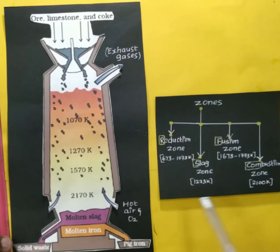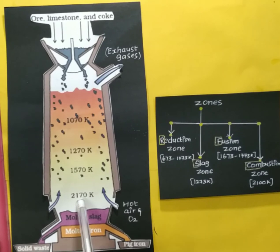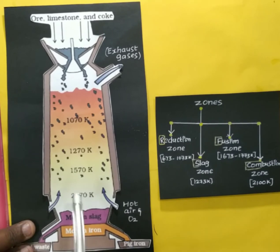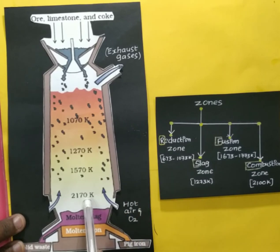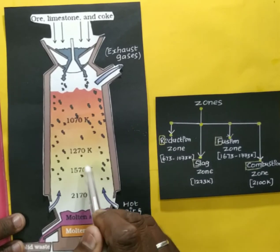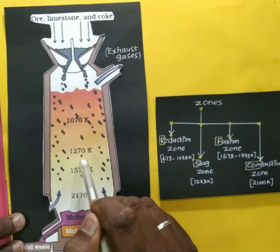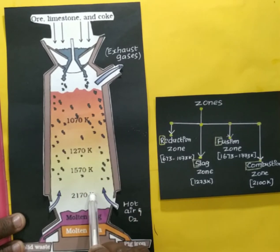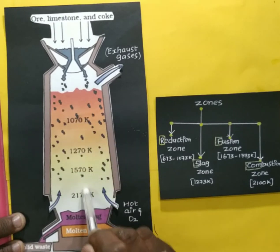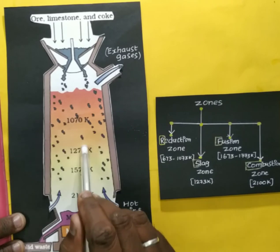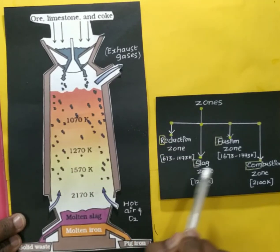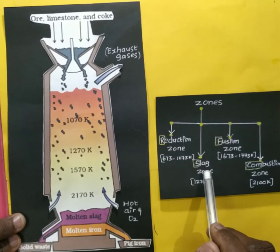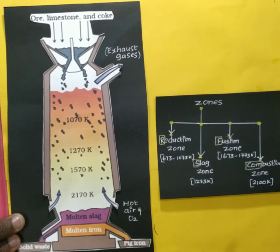And one more is the combustion zone — this is the bottom part of the furnace, which produces the maximum amount of heat. The heat content decreases from bottom to top; when moving from bottom to top, the heat reduces. So the four zones are: reduction zone, slag zone, fusion zone, and combustion zone. Let us discuss them one by one.